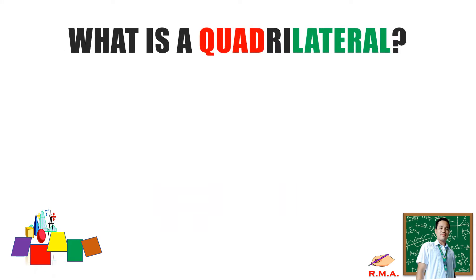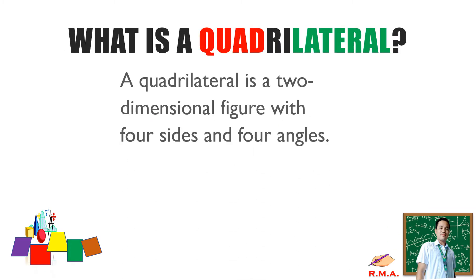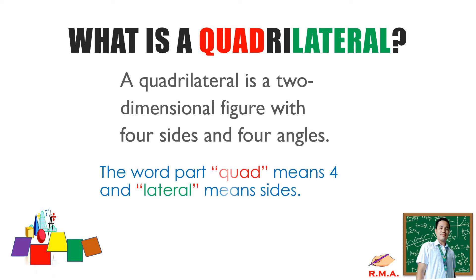First, what is a quadrilateral? A quadrilateral is a two-dimensional figure with four sides and four angles. The word part 'quad' means four and 'lateral' means sides.